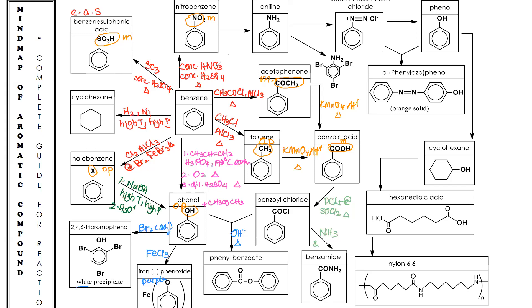From nitrobenzene — formed using concentrated HNO₃ and concentrated H₂SO₄ — when you add Sn in HCl, you form aniline. Aniline is an ortho/para director. When you add bromine water to aniline, you also form 2,4,6-tribromoaniline, which is a white precipitate.